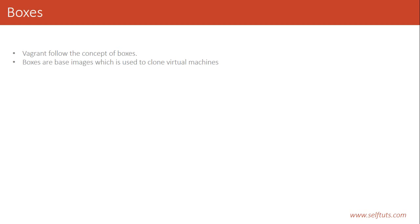In this video we will learn about boxes - what are boxes in Vagrant? Vagrant follows the concept of boxes. Boxes are base images which are used to clone virtual machines. Every virtual machine that we create in Vagrant is created through boxes. We download a single box from somewhere and we can create multiple virtual machines through it.